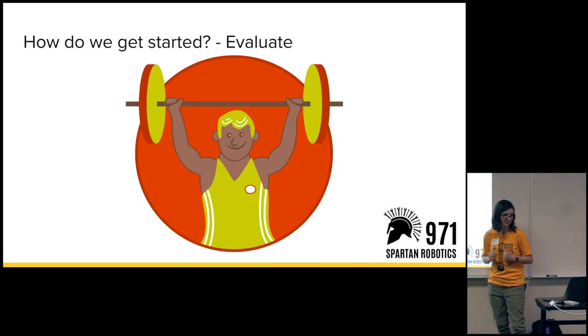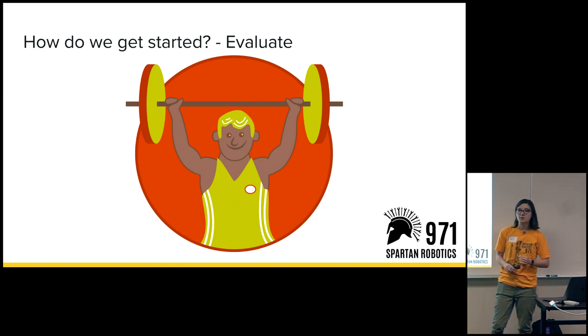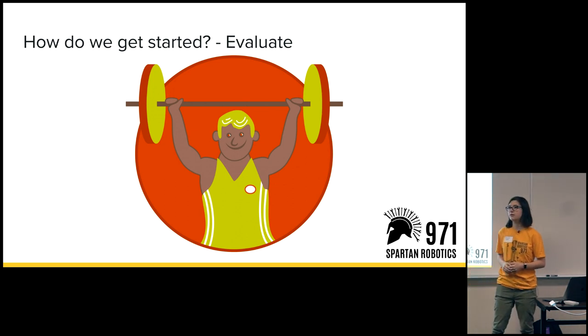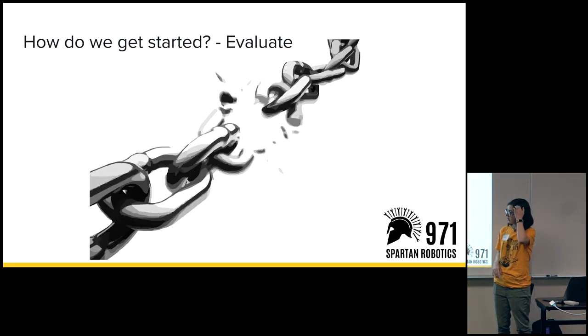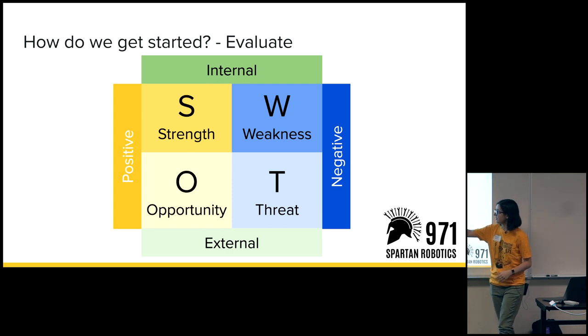Now the second question: how do we get started? This one I have a catchy answer to. The first part is evaluate. I can't know what you should do because I don't know your circumstances. So you need to go and evaluate it, look at both what your strengths and your weaknesses are. There's actually a business tool called a SWOT analysis. It looks at your strengths, your weaknesses, your opportunities and your threats.